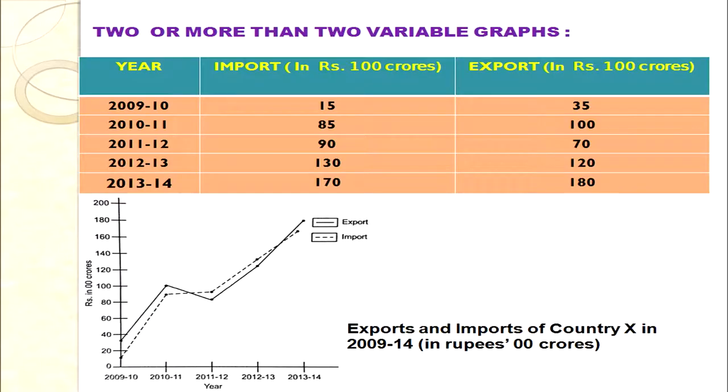For exports: 2009–10: 35, 2010–11: 100, 2011–12: 70, 2012–13: 120, 2013–14: 180. Once we have the dots, join all of them to form the line graph. The graph is labelled 'Exports and Imports of Country X, 2009 to 2014, in Rupees 100 Crores.' Always mention the unit of measurement in the diagram.